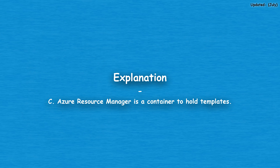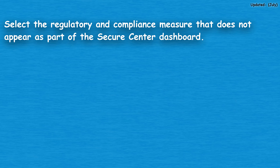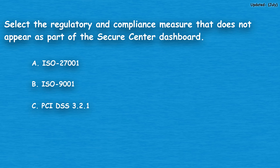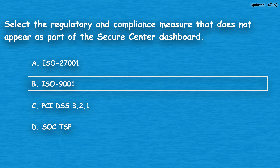The next question: select the regulatory and compliance measure that does not appear as part of the Security Center dashboard. Option A: ISO 27001. Option B: ISO 9001. Option C: PCI DSS 3.2.1. Option D: SOC TSP. The correct answer is option B, ISO 9001.